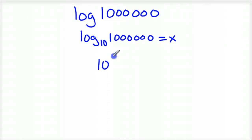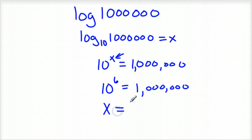This would be 10 to the X equals 1 million. Now it's just a matter of 10 to what power will give you 1 million? If you plug in a 6 there, 10 to the 6th power is indeed 1 million. So I know X equals 6, or in our case, log 1 million equals 6.